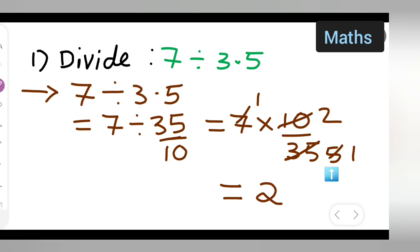The answer is 2. So I hope you have understood how to divide 7 by 3.5. Thanks for watching. If any doubts or queries, you can comment below.